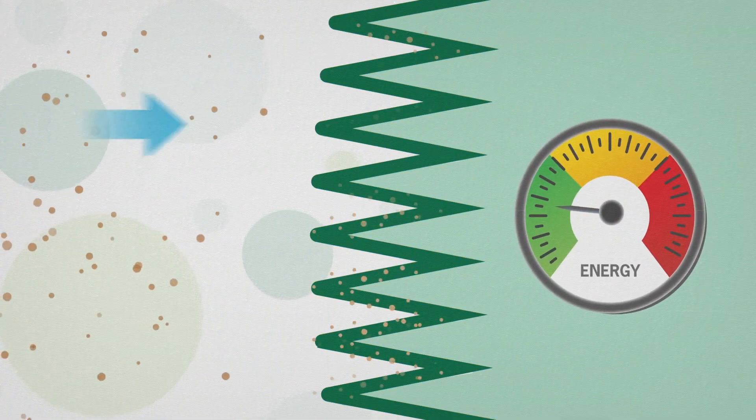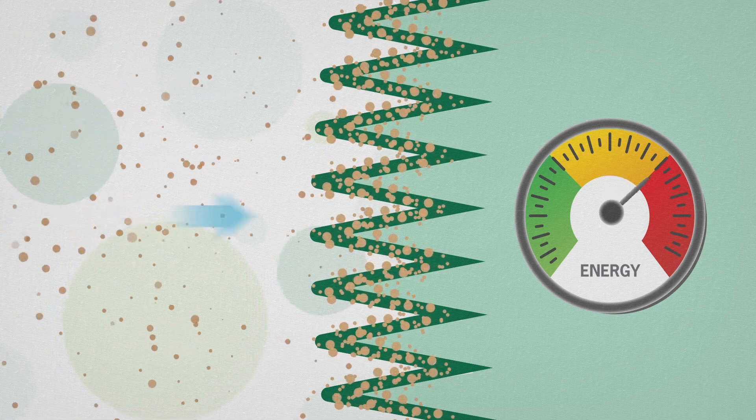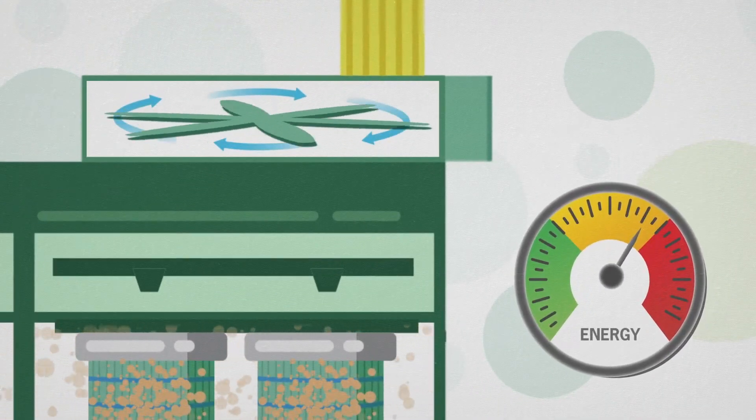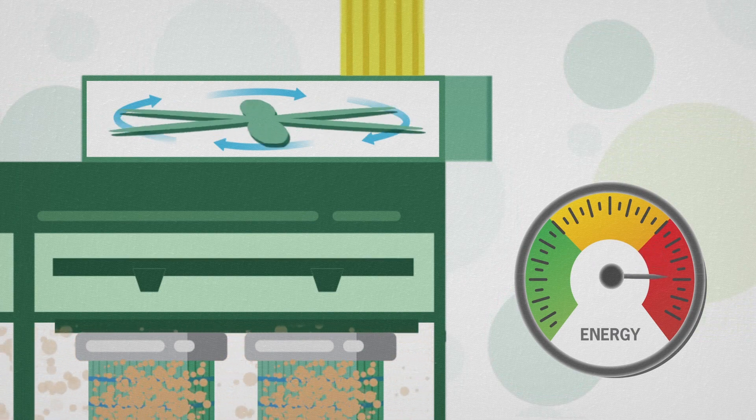Why is high pressure drop bad? Because when resistance is high, you need a lot of energy to keep pulling the air through. That means the fan motor on your dust collector has to work a lot harder and use a lot more energy.